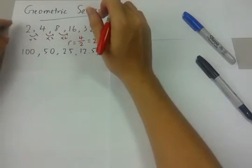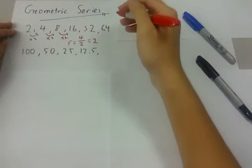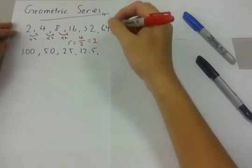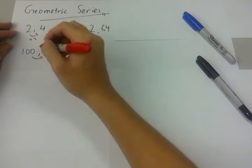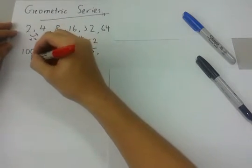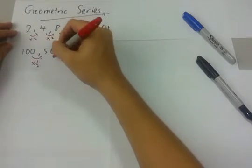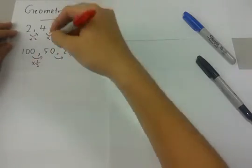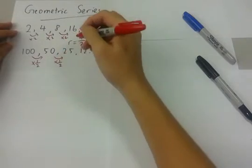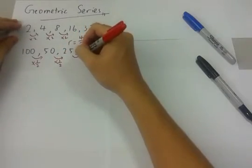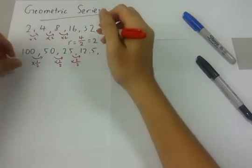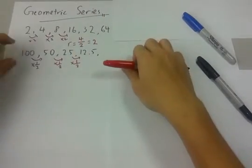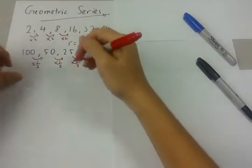For the next example, 100, 50, 25, 12.5. As you can observe, there is another pattern here. All of this: 100 times half we get 50, 50 times half we get 25, 25 times half we get 12.5. And this is called the geometric series or progressions.